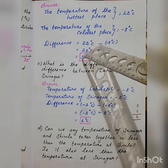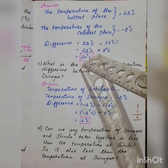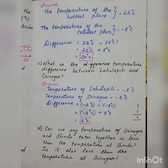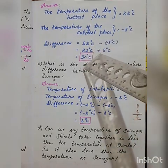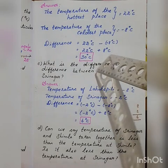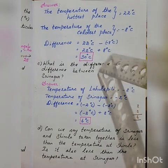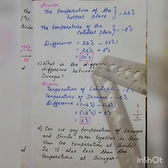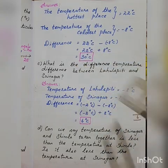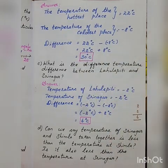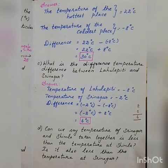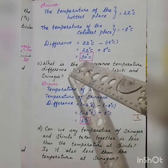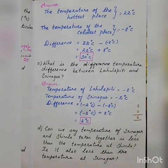In between, the minus sign — the subtraction sign — we change to addition sign. Subtraction is the opposite of addition; the second number changes to its additive inverse. The additive inverse of minus 8 degree Celsius is plus 8 degree Celsius, so we just write 8 degree Celsius. Now both are positive integers: 22 degree Celsius and 8 degree Celsius. So we add these two: 22 plus 8 degree Celsius. The answer is 30 degree Celsius.